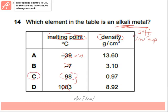Now we can confirm it with the density. We know that alkali metals are not just soft and low melting point, but also have what we call low density.